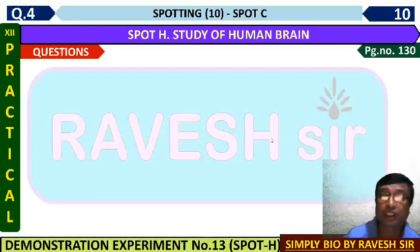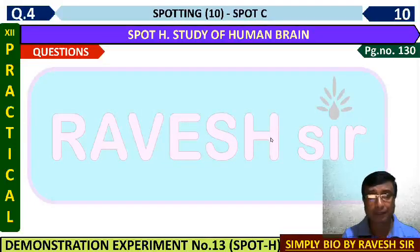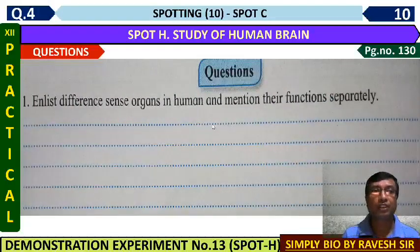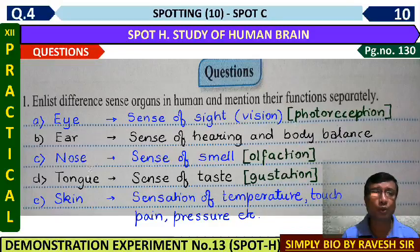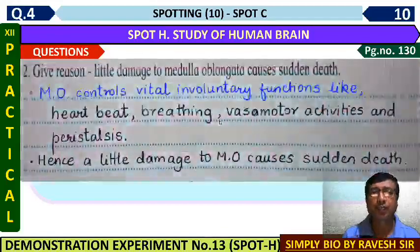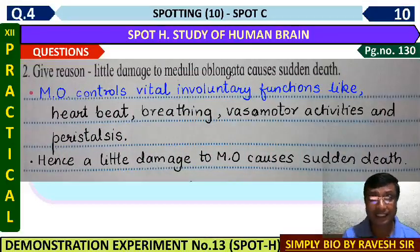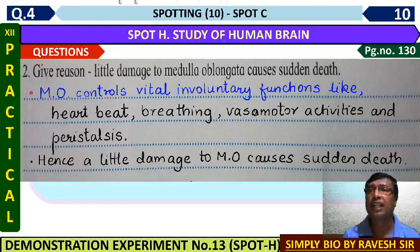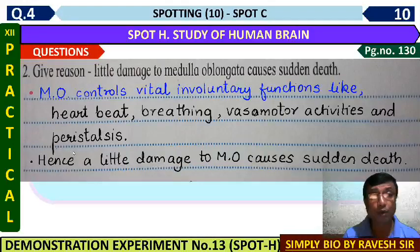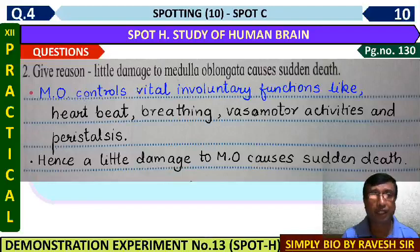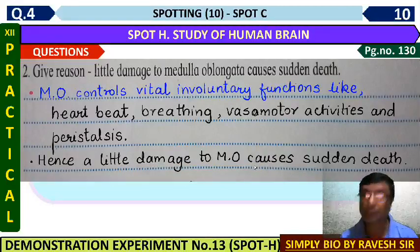On page number 130 there are some questions. The give reason question: why does slight damage to the medulla oblongata cause sudden death? Because the medulla oblongata controls vital involuntary functions like heartbeat, breathing, vasomotor activities - contraction and relaxation of blood vessels - and peristalsis related to the digestive system. Most importantly, it coordinates heartbeat and breathing. If the medulla oblongata is damaged, heartbeat and breathing can stop suddenly, and that can lead to sudden death. This is very important from the theory point of view as well.